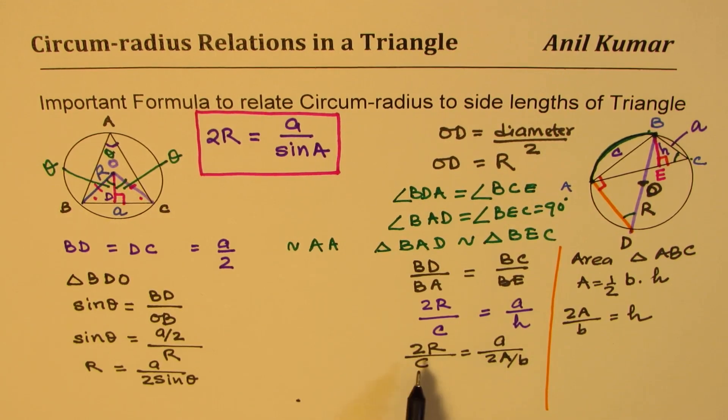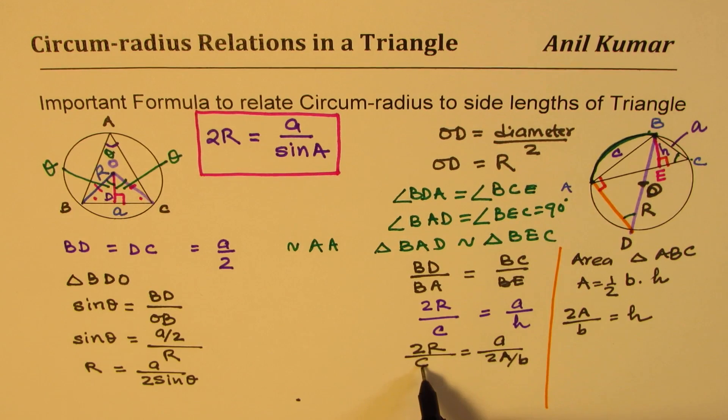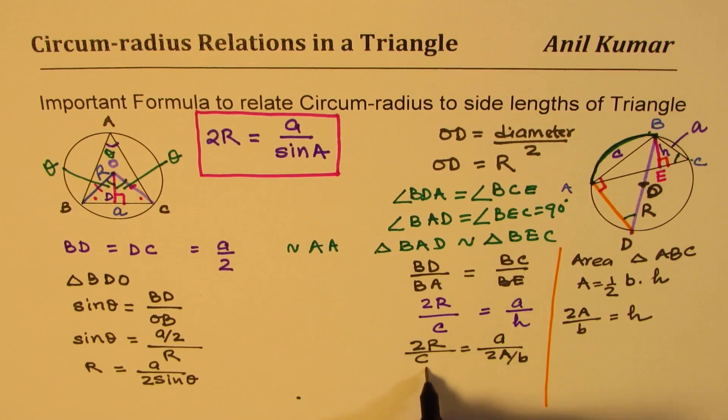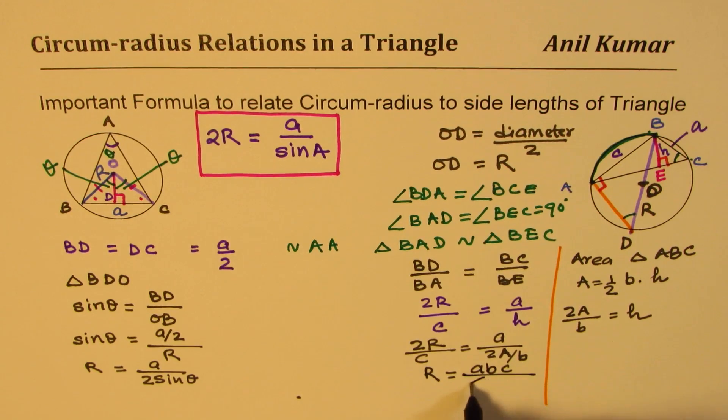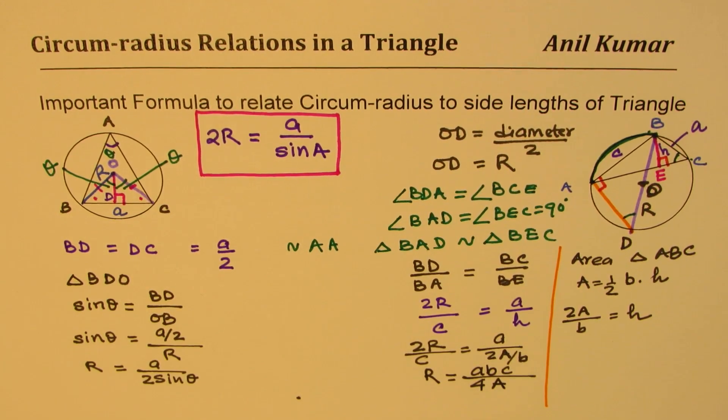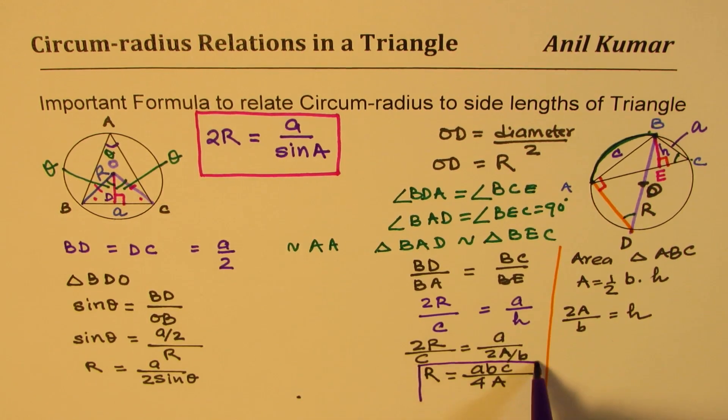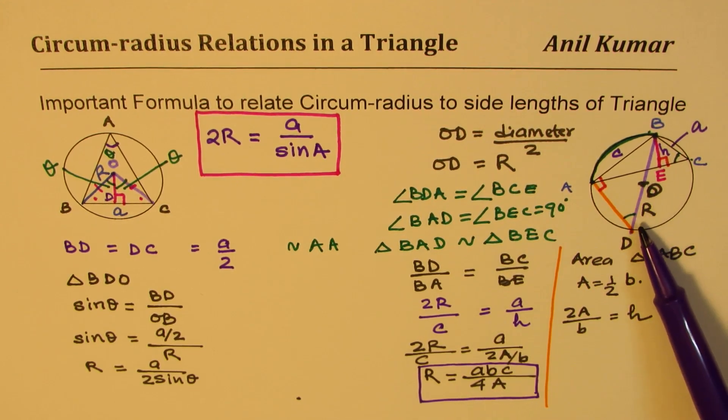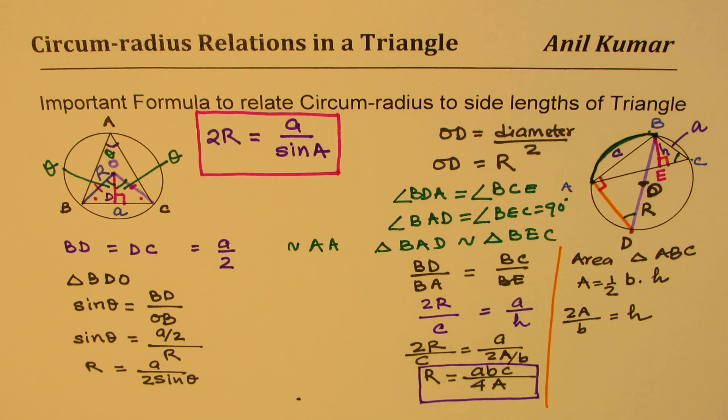We can actually correlate the radius with the area of the triangle and the sides of the triangle. If I cross multiply, take c on this side, that b comes on the top, we get abc in the numerator and 4A in the denominator. So we can write R equals abc over 4A. If we know the area of the triangle, we can find the value of circumcenter radius using this formula.